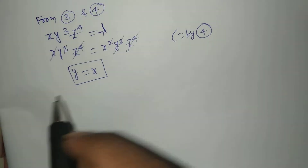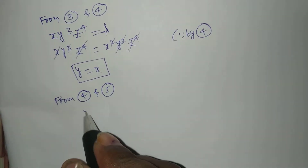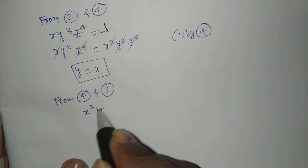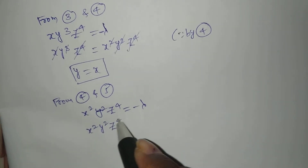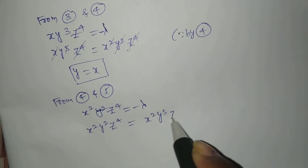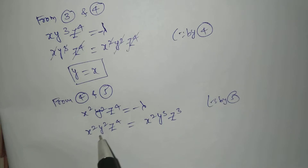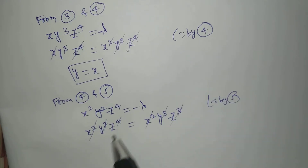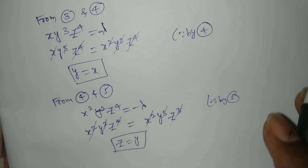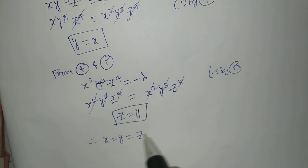Now solving equations 4 and 5: from equation 4, x squared y squared z to the power 4 equals minus λ, and from equation 5, x squared y cubed z cubed equals minus λ. Setting them equal and cancelling x squared from both sides, then cancelling y squared and z cubed, we get z equals y. Therefore, since x equals y and z equals y, we conclude x equals y equals z.